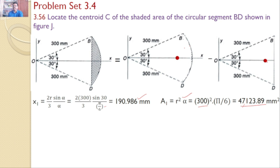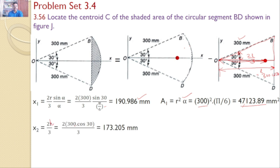Now consider the right angle triangle. The centroid of the triangle is located at a distance from the origin. To find this distance, consider the right angle triangle where the side is 300 and the angle is 30°. So L = 300 cos 30°, and the centroid distance X2 = 2L/3 = 2 × 300 cos 30° / 3 = 173.20 mm.